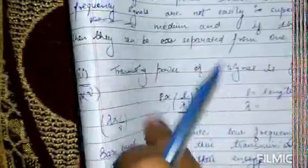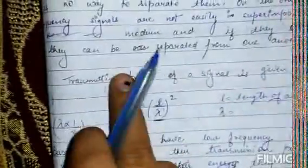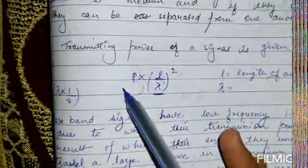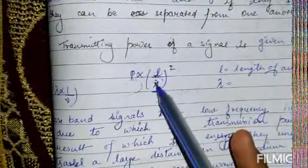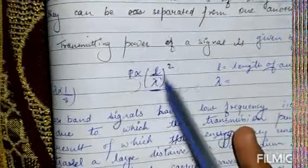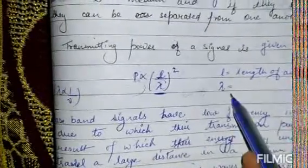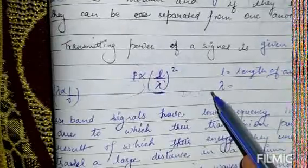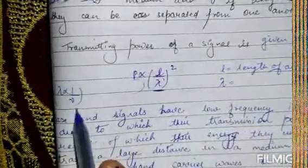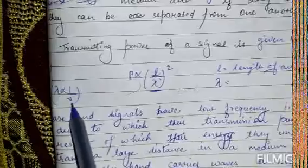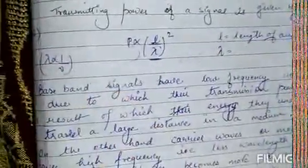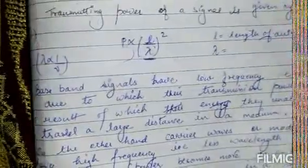The third reason for needing modulation is transmitting power. The transmitting power of a signal is proportional to (length of antenna / lambda) squared. Since lambda = 1/nu, baseband signals have low frequency and therefore more wavelength, which means their transmission power is less.